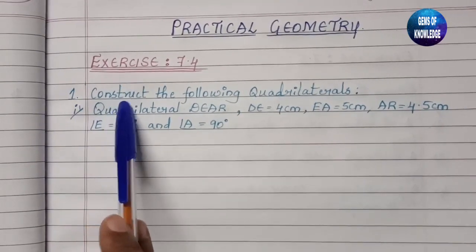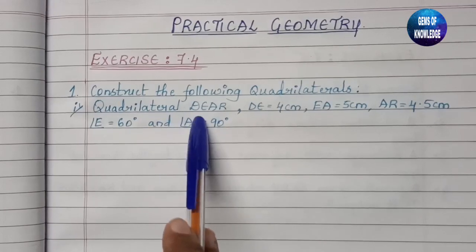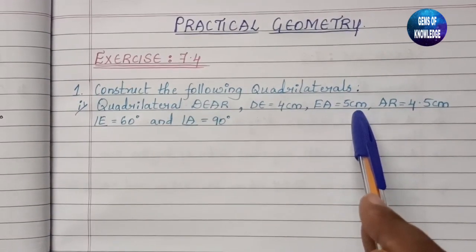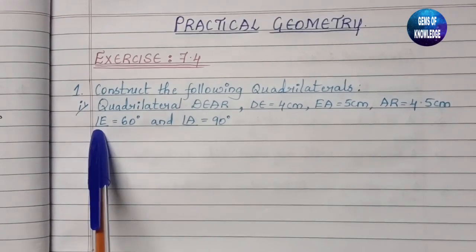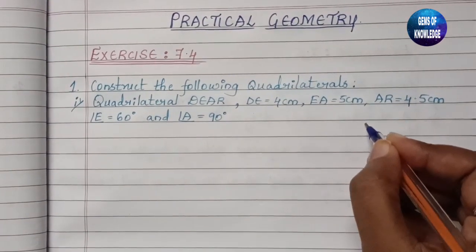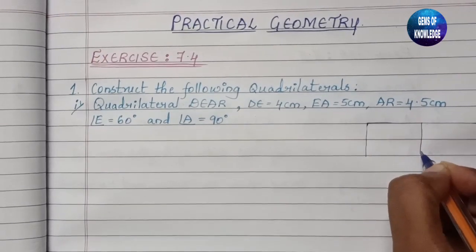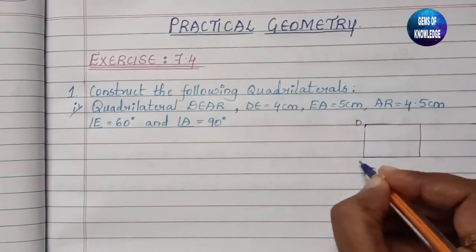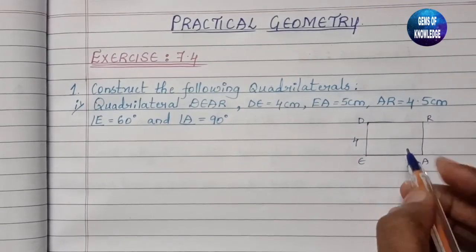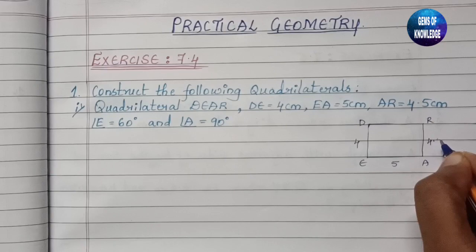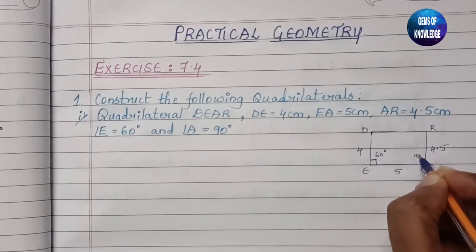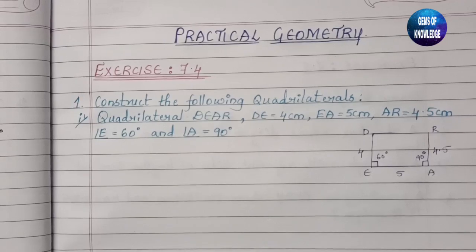The first question says: construct the following quadrilaterals. The first quadrilateral is DEAR, where DE = 4 cm, EA = 5 cm, AR = 4.5 cm, angle E = 60°, and angle A = 90°. Let us first draw a rough diagram — a four-sided figure with these measurements — so we can identify what we need to construct.